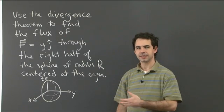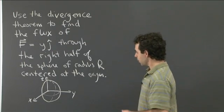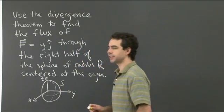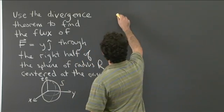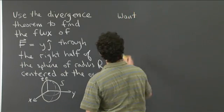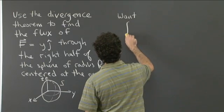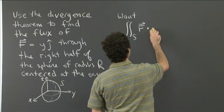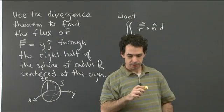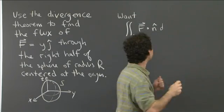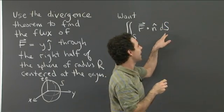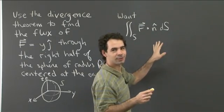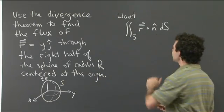Hopefully you had some luck working on this problem. Let's see how we can go about it. So the thing we're asked to compute — let's call the surface of this hemisphere S. We want the flux through S, which is the double integral over S of our field F dotted with the normal with respect to surface area.